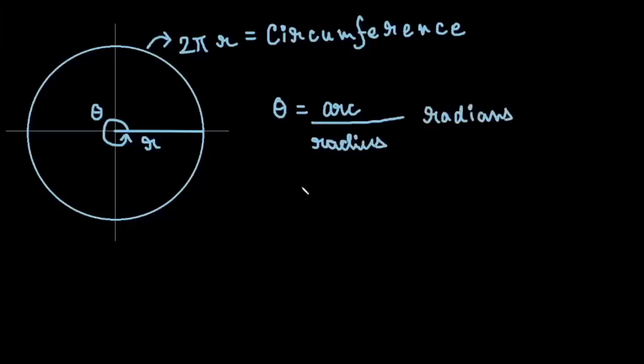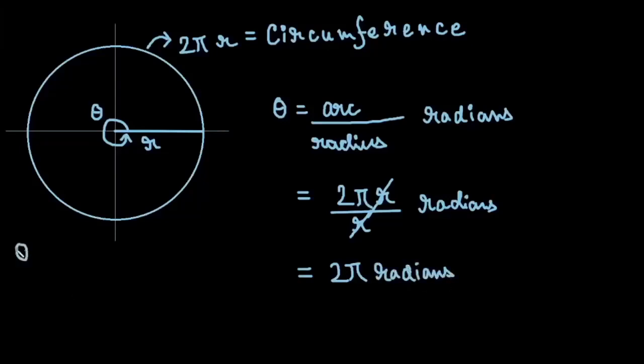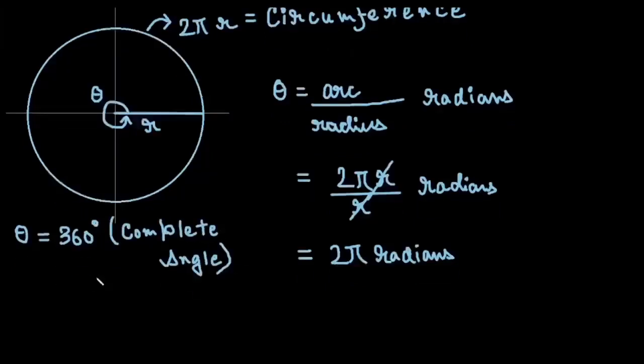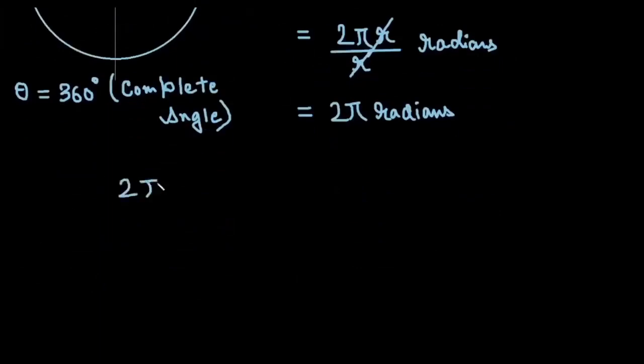We will get 2πr divided by r radians, which will result in 2π radians. It's equal to 360 degrees since it's a complete angle. We can find that theta equals 360 degrees equals 2π radians.